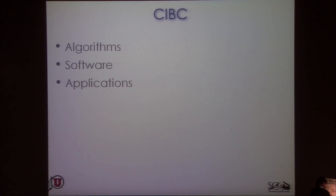The center has three aspects: algorithms, software, and applications. I'm going to start by talking about examples of applications to give you a feeling for the kind of work we do and how the software fits into that. Behind all this are bioengineering and computer science PhD students working to get degrees, so there's a lot of technical work, though I won't dwell too much on that today.